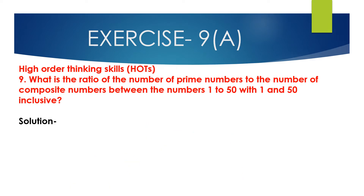Now we will solve question number 9, a Higher Order Thinking Skill question. What is the ratio of the number of prime numbers to the number of composite numbers between 1 and 50, with 1 and 50 included? First, we have to find the prime numbers between 1 and 50.